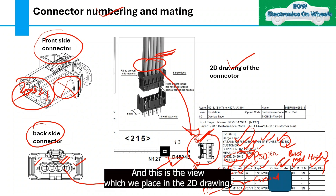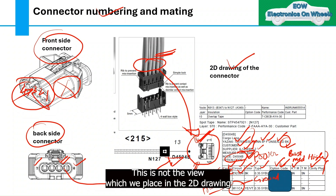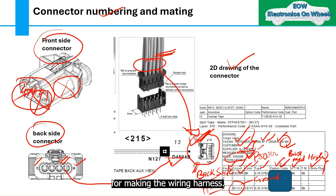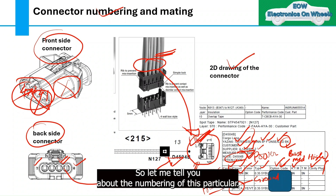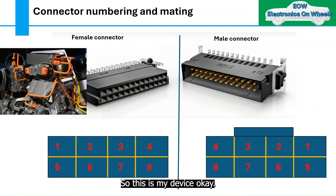This is the wiring view and this is the view which we place in the 2D drawing. If you still do not understand, please comment — this is not the front view we place in the 2D wiring harness drawing.